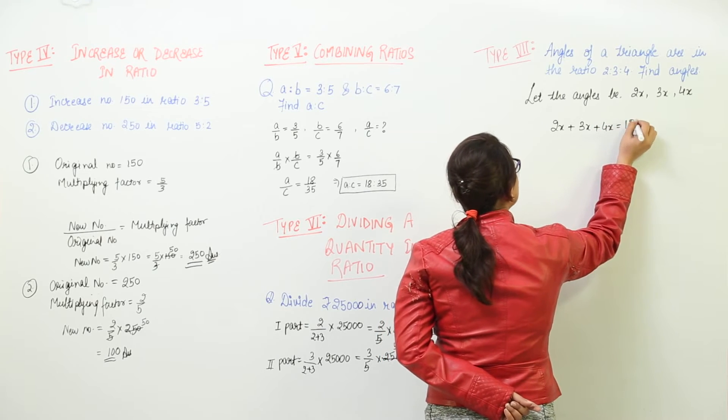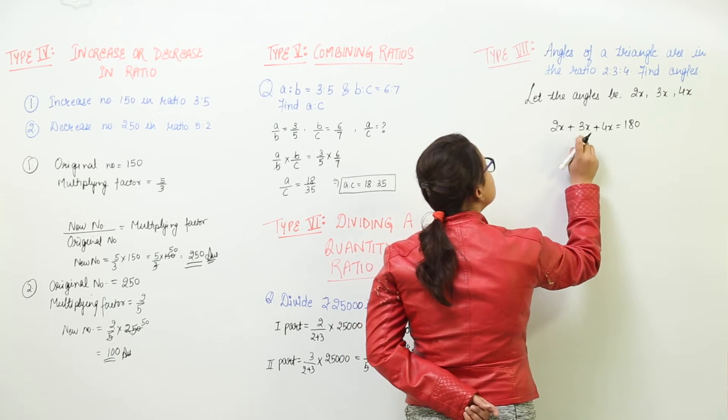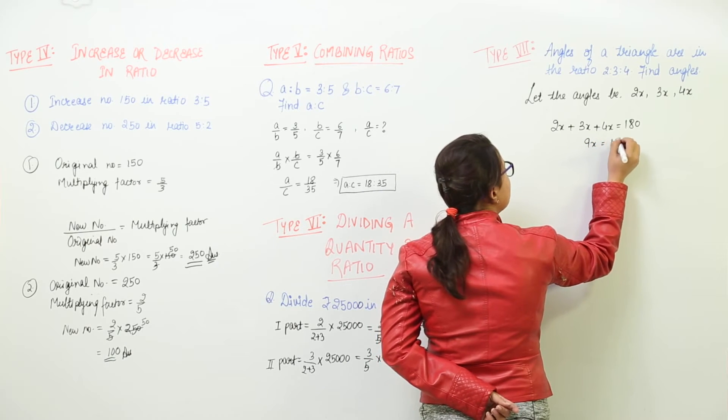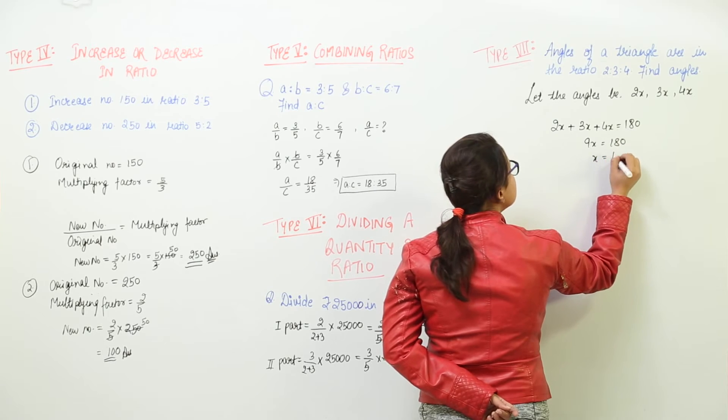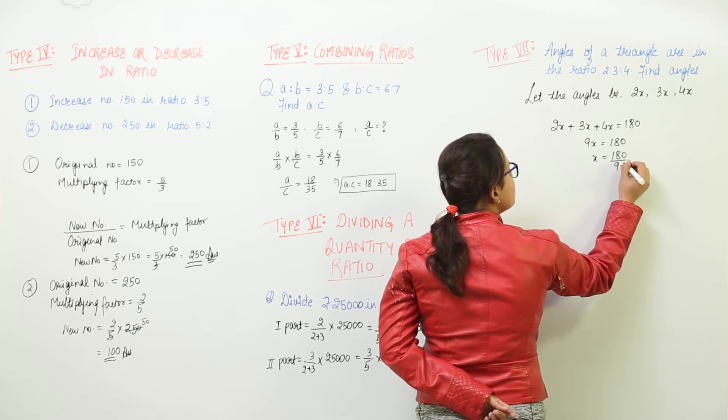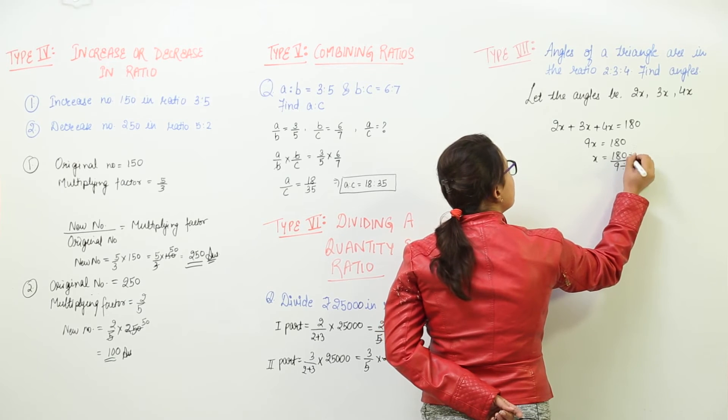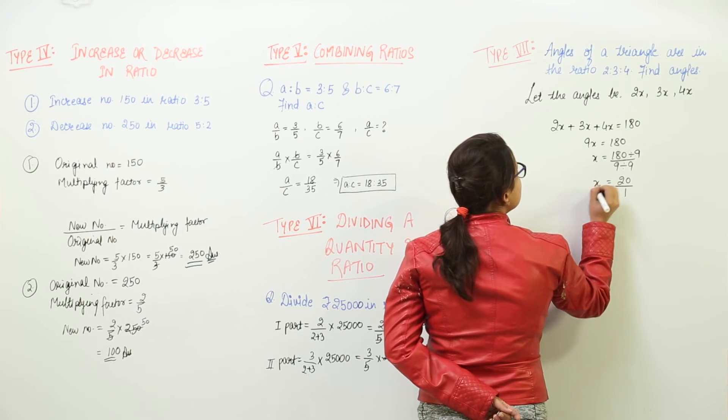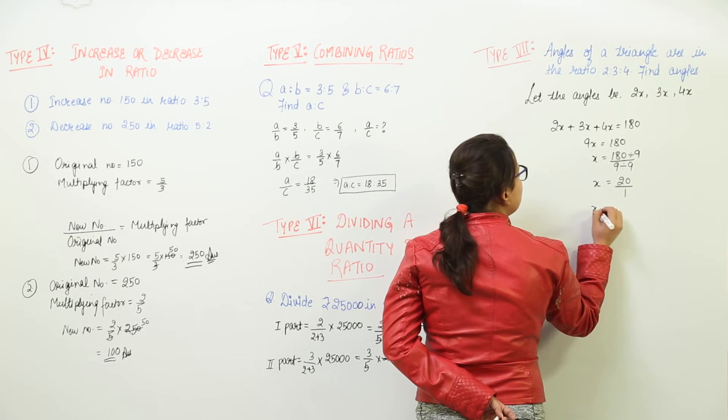So we write that down and solve this: 2x plus 3x plus 4x equals 180. That gives us 9x equals 180. Therefore, x equals 180 over 9. Dividing by the common factor, we get 20 over 1. So x comes out to be 20.